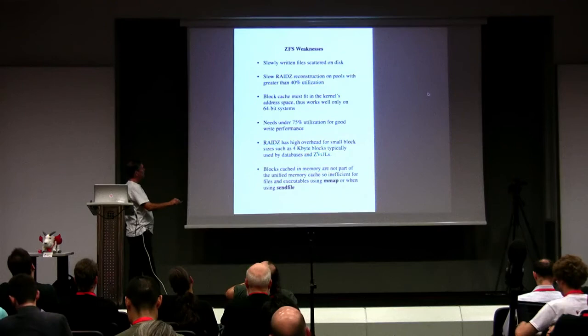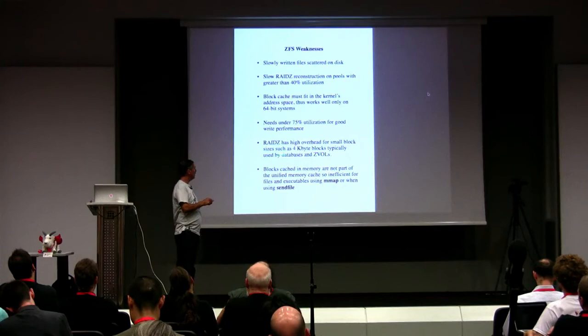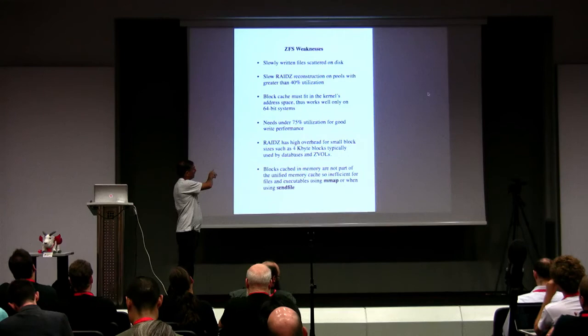Reconstructing a nearly full pool can go up to 10 times slower than with traditional physical media due to random access patterns. The block cache must fit in the kernel's address space — ZFS wants all physical memory mapped into the kernel, so on a 32-bit address space the cache can't be bigger than about a gigabyte regardless of how much physical RAM you have. If you're going to run ZFS, make sure you're on a 64-bit processor. If the pool gets more than about 75% full, allocations get very painful because ZFS wants 128K blocks and has to use gang blocks for smaller pieces — so don't plan to run above 75% utilization. Fortunately you can always add disks to expand the pool. RAID-Z with 4K blocks has 50% overhead for single redundancy, a significant cost for zvols or databases. Finally, blocks cached in memory are not part of the unified buffer cache — ZFS uses its own ARC, so mmap or sendfile incurs an extra memory-to-memory copy on every read or write.